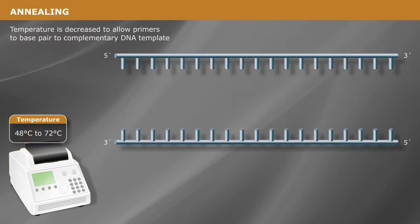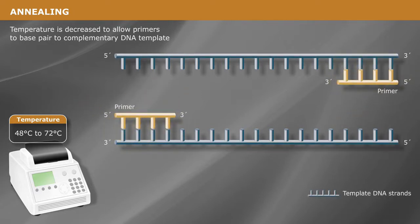Next, the temperature is decreased during the annealing step. This allows the primers to anneal the complementary sequence on the template DNA strands.